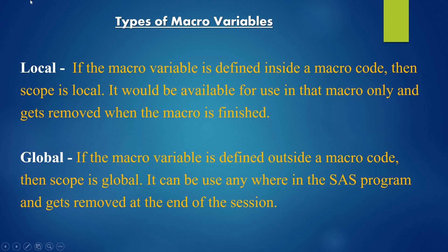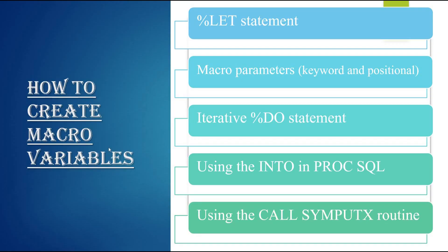Now let's go to SAS and see the different ways to create a macro variable. There are five different methods we are going to discuss. The first one is the %LET statement. The second is macro parameters — both keyword and positional. The third is an iterative DO loop. The fourth is using the INTO statement in PROC SQL. And the last one is using the CALL SYMPUT routine in a data step.